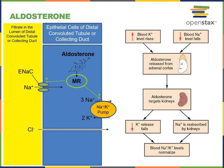Aldosterone works by binding to the intracellular mineralocorticoid receptor and stimulating increased transcription of genes for the epithelial sodium channel and sodium-potassium pump. The epithelial sodium channel enables facilitated diffusion of sodium from the filtrate into epithelial cells of the distal convoluted tubule or collecting duct, while the sodium-potassium pump enables primary active transport. By increasing expression of these proteins, an increased number of sodium channels and sodium-potassium pumps leads to an increased rate of sodium reabsorption and simultaneously an increased rate of potassium secretion.